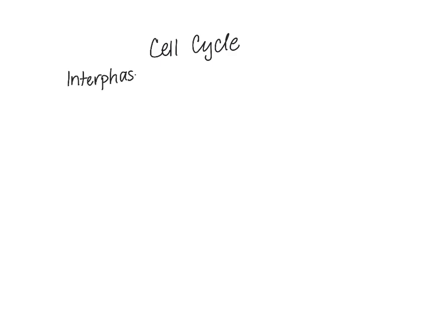In this video, we're going to look at the steps of the cell cycle, which is basically the life cycle of the cell. We'll start by looking at a phase called interphase. Interphase is characterized by the cell just being a cell and doing what cells do.